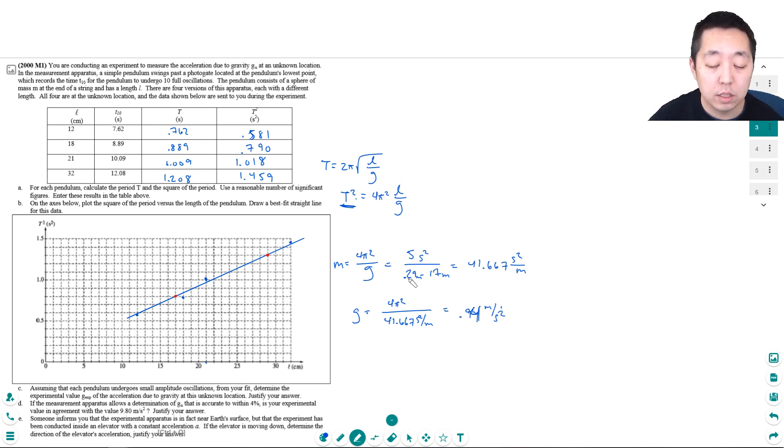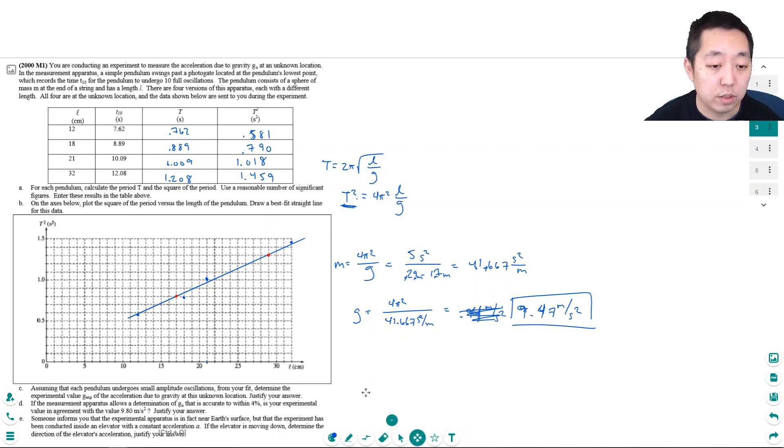Oh, haha, I messed up my conversion! It should be 2.9 and 1.7, not 0.29 and 0.17. So the slope should be 4.1667. That makes more sense. I can't convert centimeters to meters for some reason. So I got g = 9.47 meters per second squared. That's close—the actual answer is about 9.8, so that's pretty good.